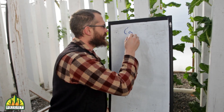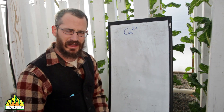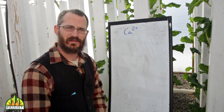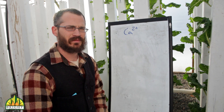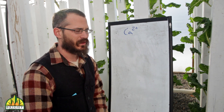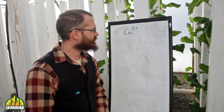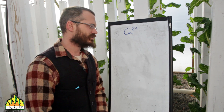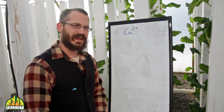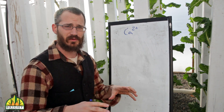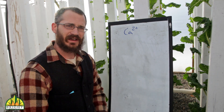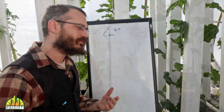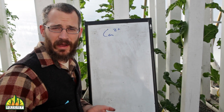Calcium can be kind of tricky to manage because it interacts strangely with a few other things in your system, including potassium and magnesium. The plant's uptake of calcium is a little bit different — it's a little bit less passive, and calcium isn't actively moved around the plant. So we have to know what we're looking for and how to manage calcium well. But first, we need to talk about what calcium does.